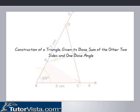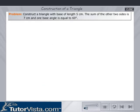Construction of a triangle given its base, sum of the other two sides, and one base angle. Problem: Construct a triangle with base of length 5 cm, the sum of the other two sides is 7 cm, and one base angle is equal to 60 degrees.